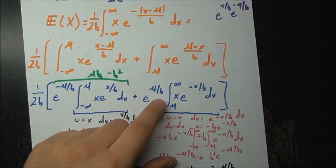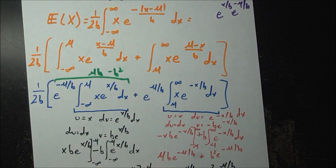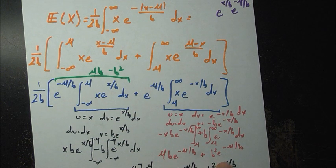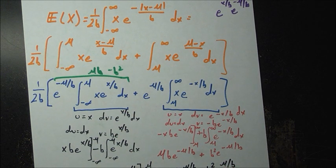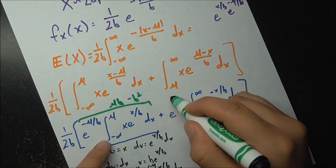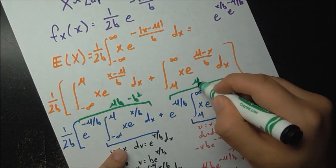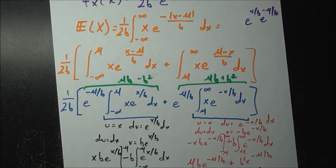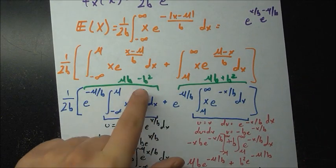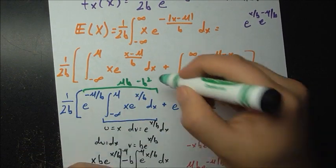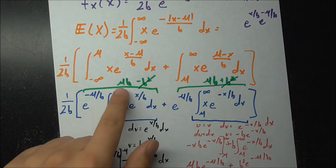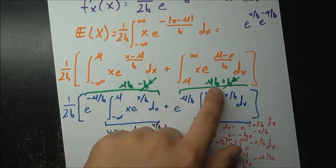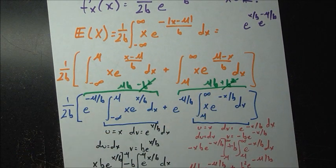Likewise, the second part is similar: e to the mu over b cancels similarly, giving mu·b plus b squared. So now the minus b squared and plus b squared cancel, leaving two copies of mu·b. Dividing by 2b gives just mu.